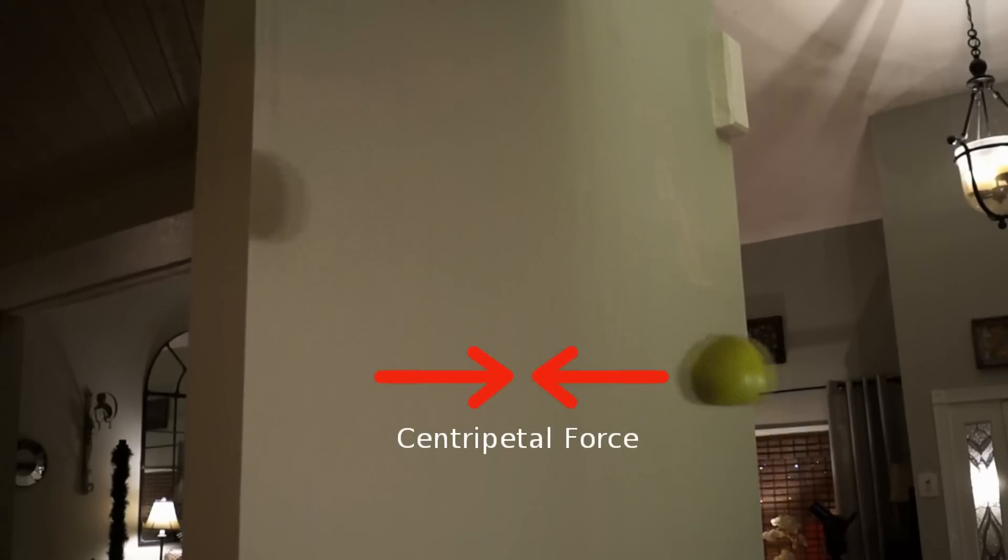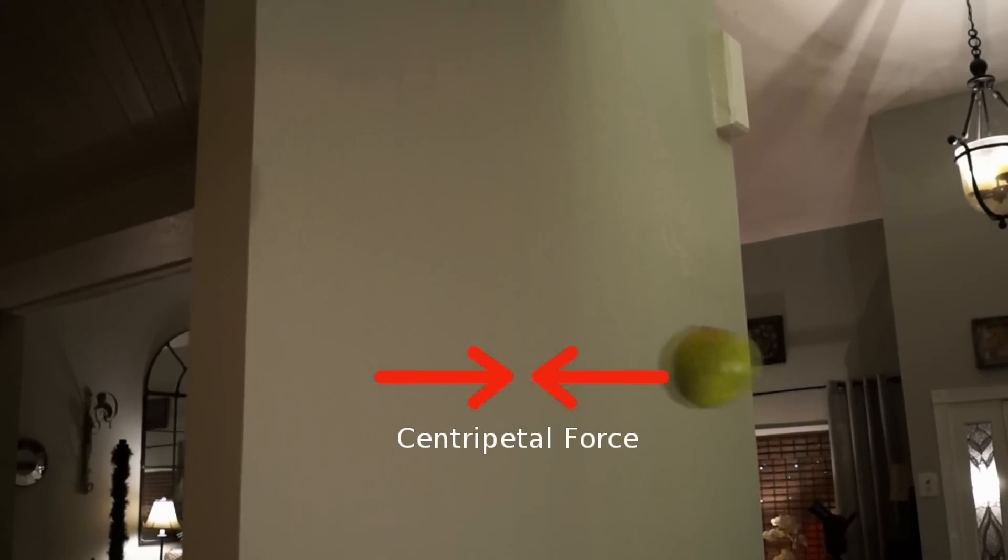We're simulating that here because we don't have objects as big as the Moon, so we have to simulate it. The string is providing that force. It's pulling the orange inward. That's the centripetal force. The centrifugal force is counteracting that force because it has momentum. It's been pushed by me, so it's moving in a circle.